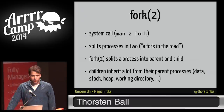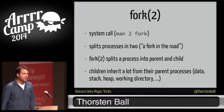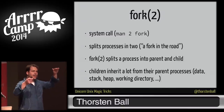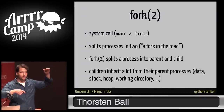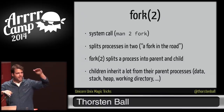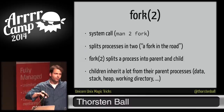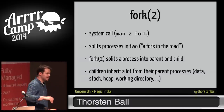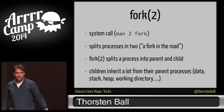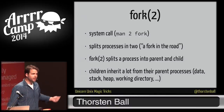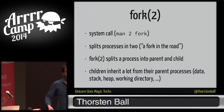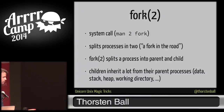Fork splits your process in two. If you have a process running and you call fork, you're asking the kernel to split your process in two. When fork returns, you have a child process and a parent process. What's really interesting is that the child process inherits a lot from the parent: the data — meaning the code, all the Ruby code in memory — the heap, the memory layout, all the objects, all the classes, and the stack.